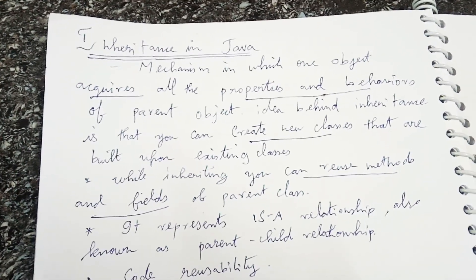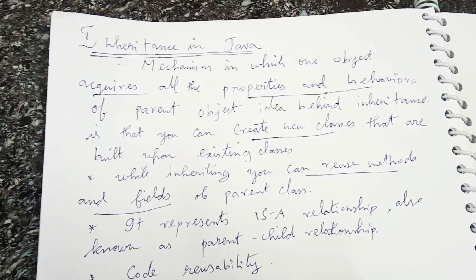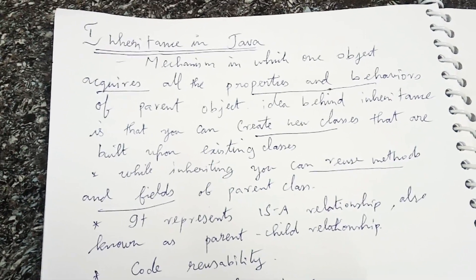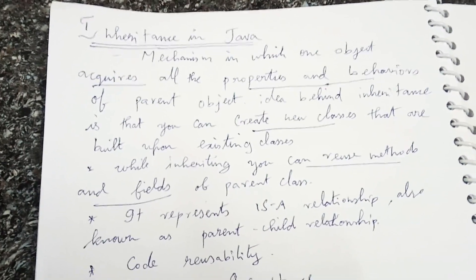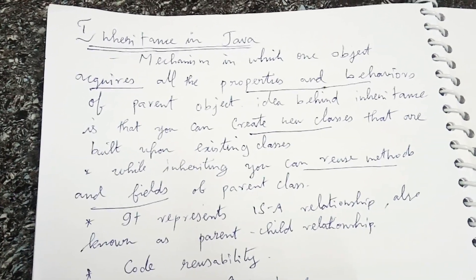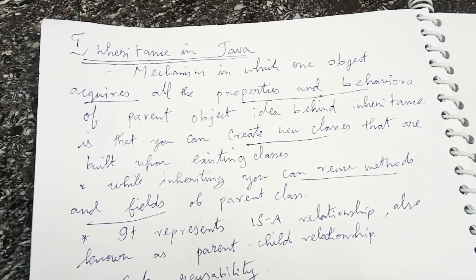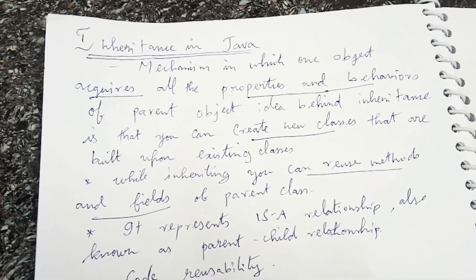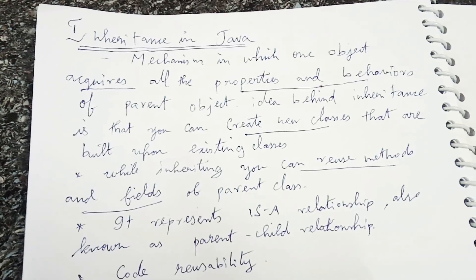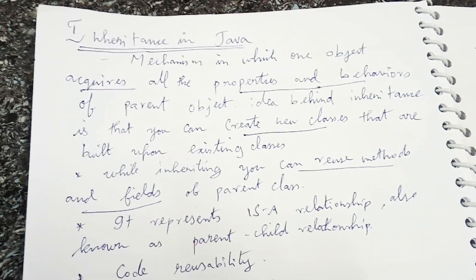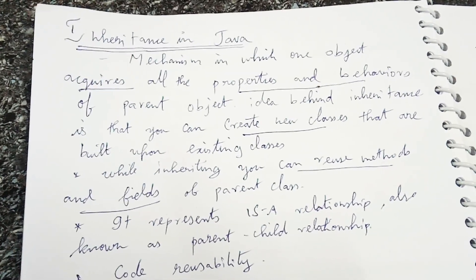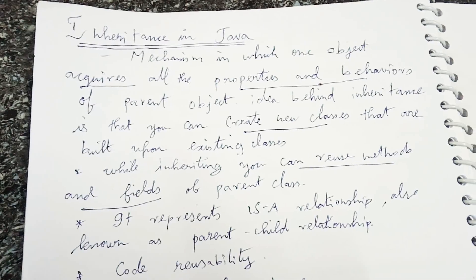Code reusability is one of the important things in Java which makes Java an important object-oriented language. Using inheritance concepts we are able to extend the code that we have already written. The mechanism in which one object acquires all the properties and behaviors of a parent object is called inheritance. The basic idea behind inheritance is that you can create new classes that are built upon existing classes.